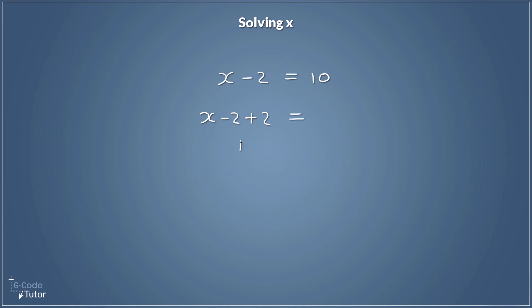Whatever we do to one side of the equation we have to do to the other side. This side of the equation we have 10, and because we've added 2 here to remove the minus 2, we also have to add 2 to the other side. Minus 2 plus 2 cancels out, so we're left with x equals 10 plus 2, which is 12. We can substitute our original equation to double-check: if x is 12, then 12 minus 2 does in fact equal 10. That's how we check our working with equations — substitute the found value back in and see if it balances.